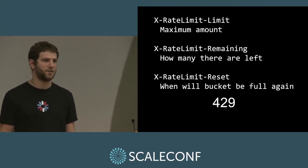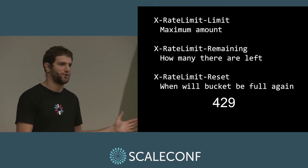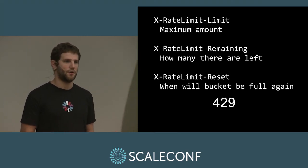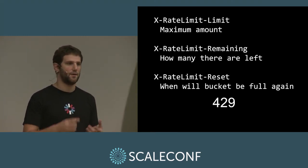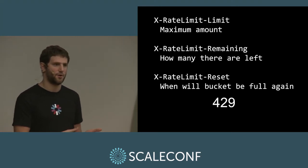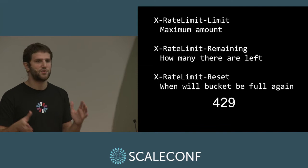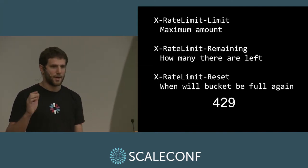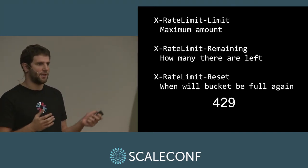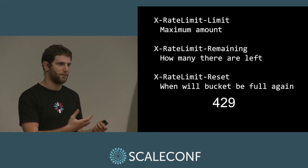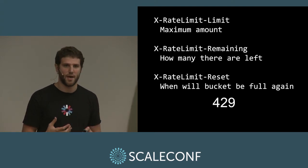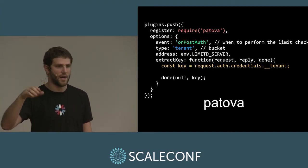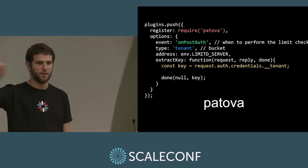To help users throttle themselves, provide headers: here's how much you have left, here's when it's going to refill, here's your maximum capacity — take that into account if you want to show a friendly message to your users. We're trying to scale and protect ourselves, but we have to be friendly towards whoever's using our API. This is a cross-cutting concern — we use this in all four of our APIs. Any new API that comes, we just plug this in.